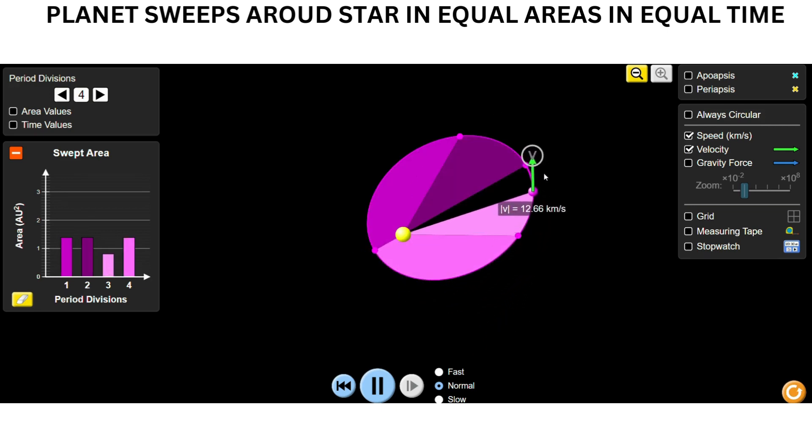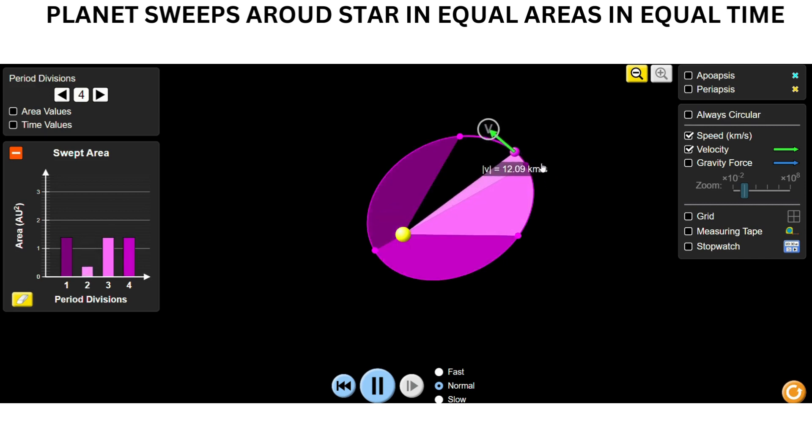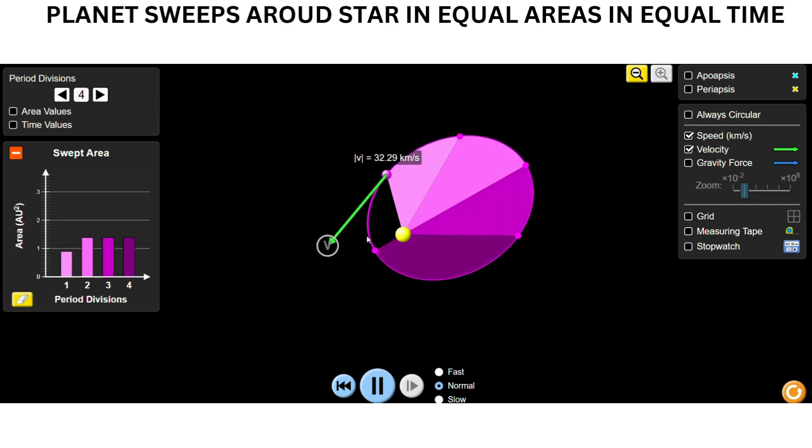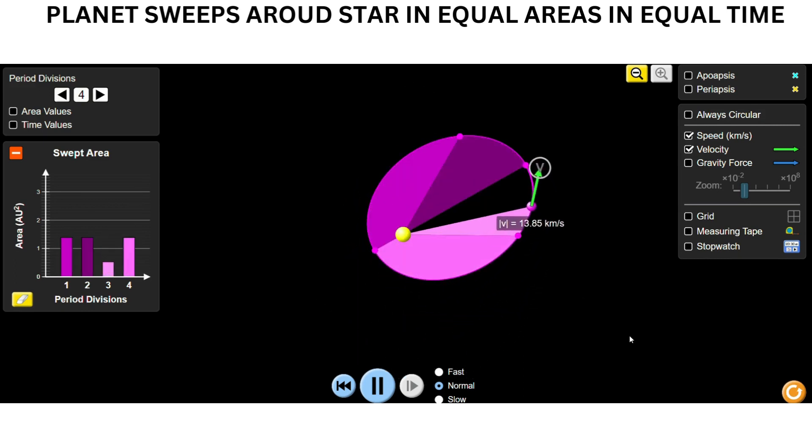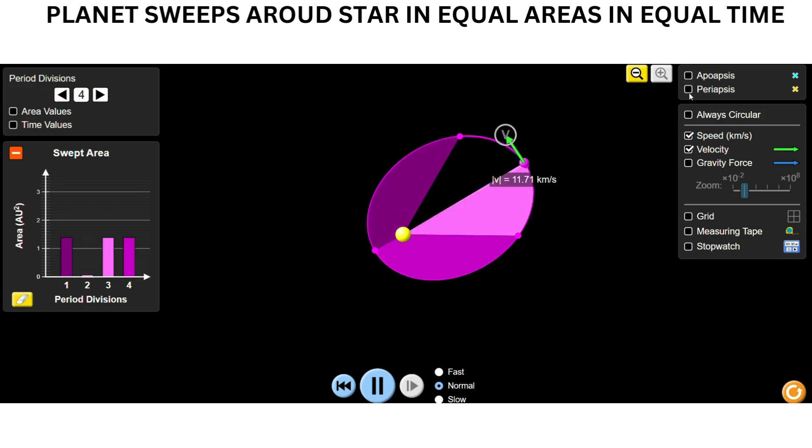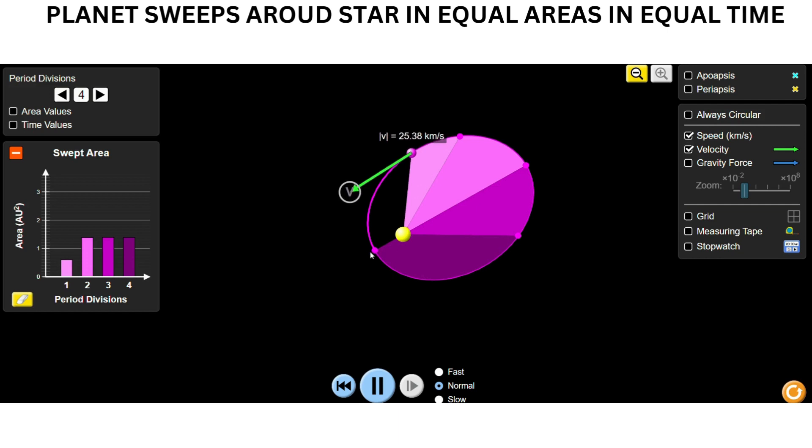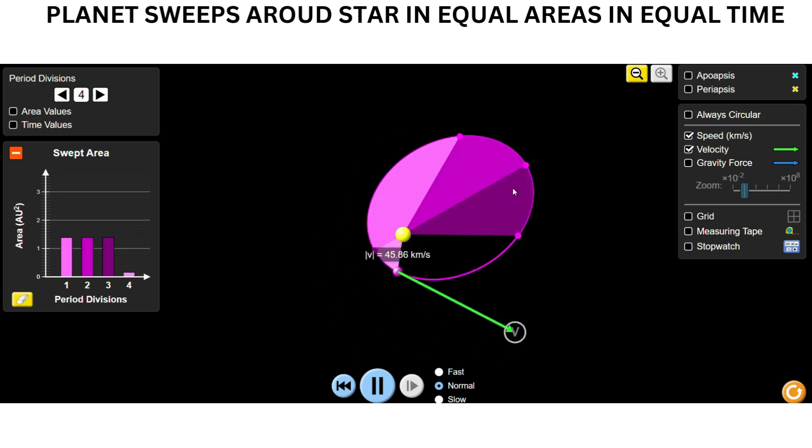See, its speed is around 10 kilometers per second here, and as it goes towards the sun, it's increasing. You can clearly observe the planet speeds up as it approaches the star and slows down as it moves away from it.